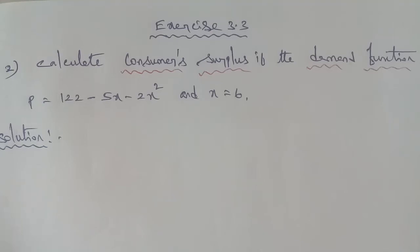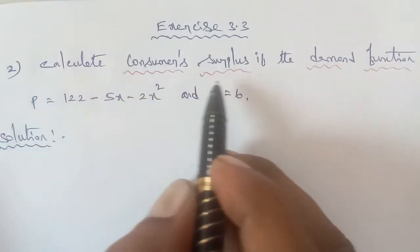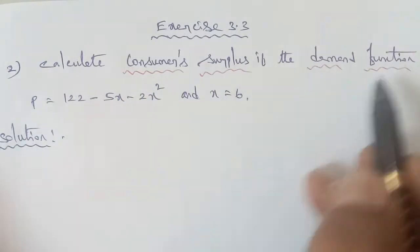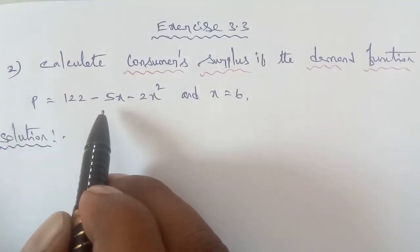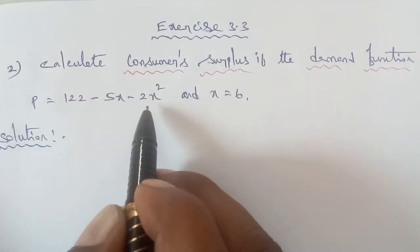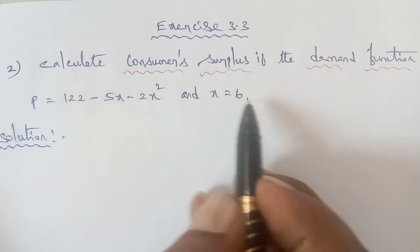Hi students, I am Gopinath. This is Business Snacks, exercise 3.3, question number 2: calculate the consumer surplus if the demand function P is equal to 122 minus 5X minus 2X squared, and X is equal to 6.